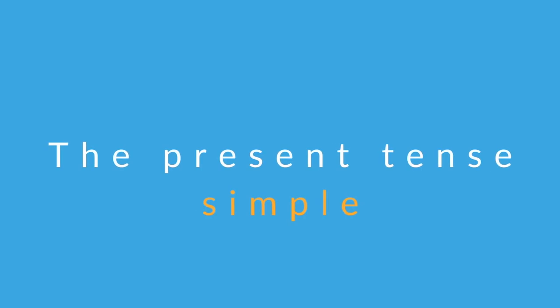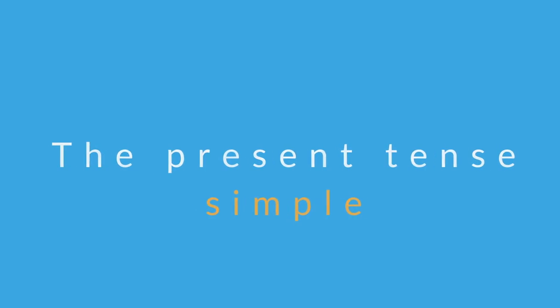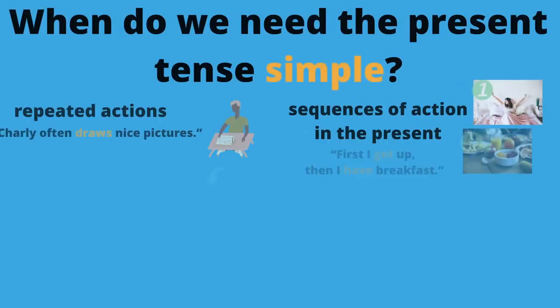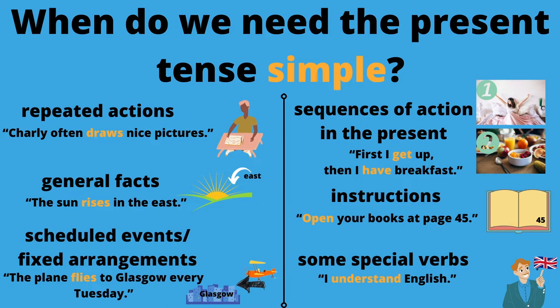The present tense simple is usually the first tense you learn in your native language and probably also in English. It's quite simple. We use it to express repeated actions — for example, 'Charlie often draws nice pictures' — or general facts that cannot be argued, like 'The sun rises in the east.' Also for scheduled events: 'The plane flies to Glasgow every Tuesday.' Sequences of actions, habits, giving instructions, or with special verbs like 'I understand English.'